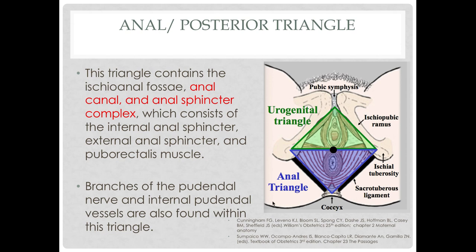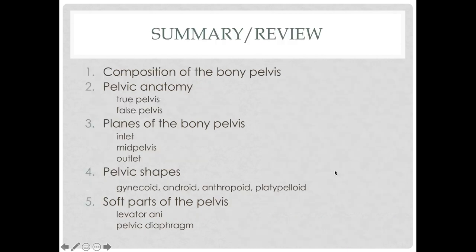The urogenital triangle contains portions of the urethra and vagina, branches of the internal pudendal artery, and the compressor urethra and urethrovaginal sphincter muscles — comprising part of the striated urogenital sphincter complex. The anal triangle contains the ischioanal fossa, the anal canal, the anal sphincter complex — consisting of the internal anal sphincter, external anal sphincter, and puborectalis muscle — as well as branches of the pudendal nerve and internal pudendal vessels.